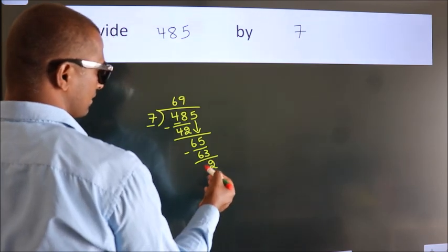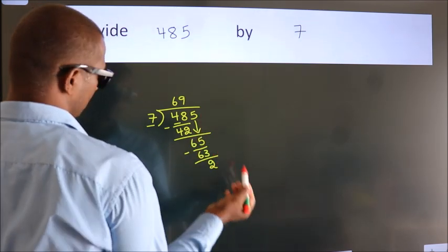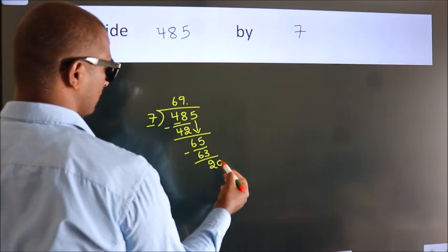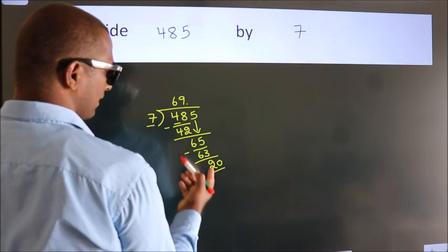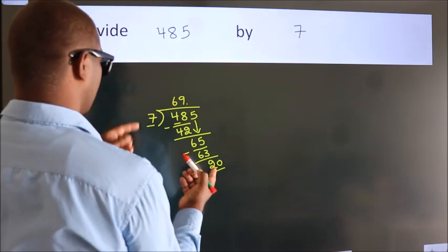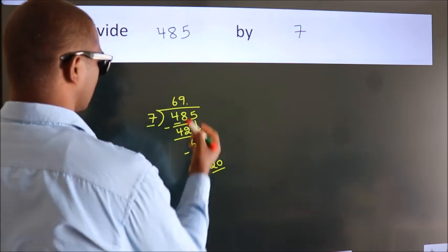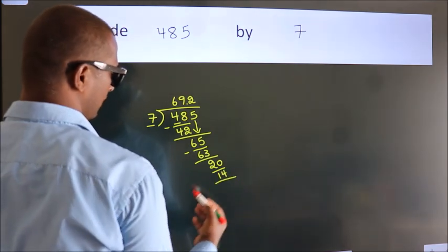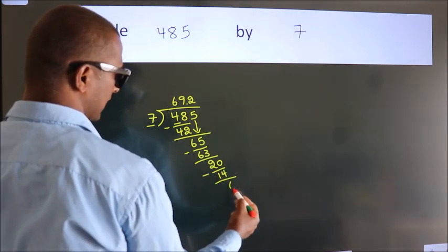After this, no more numbers to bring down. So what we do is, we put a dot and take 0, making 20. A number close to 20 in the 7 table is 7 times 2, which is 14. Now we subtract. We get 6.